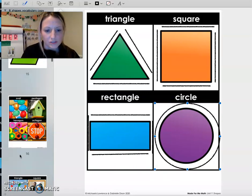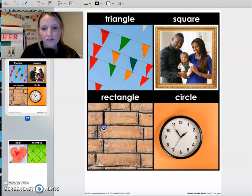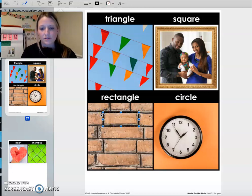I've got some real-life pictures of some shapes that you might see around you. We have our triangles like in the flags, square like a picture frame, circle like a clock, and rectangles are like the bricks that you might see in the walls. Okay, so shapes are all around us.